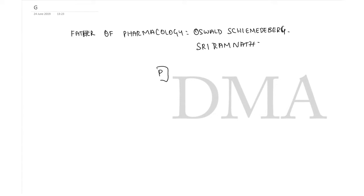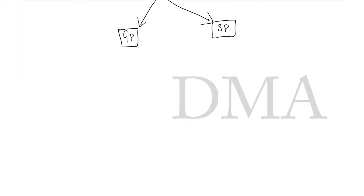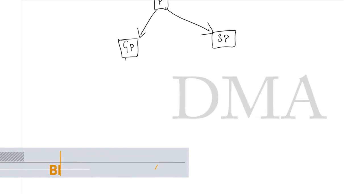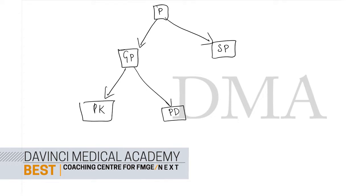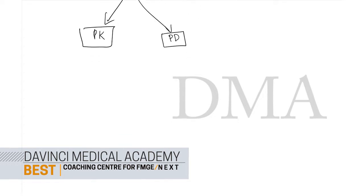Pharmacology is basically divided into general pharmacology and systemic pharmacology. In general pharmacology, we deal with pharmacokinetics and pharmacodynamics.